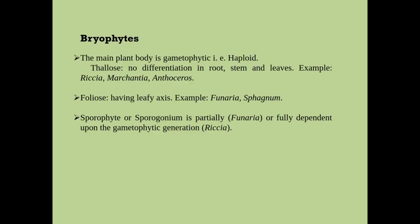In bryophytes, the main plant body is gametophytic, that is haploid. A gametophytic plant body is sometimes of thallose type and sometimes it is foliose. If it is thallose, like in Riccia, Marchantia, and Anthoceros, it is not differentiated into root, stem, and leaves.